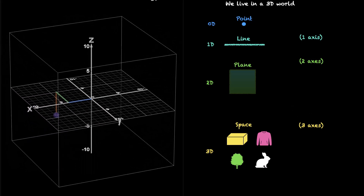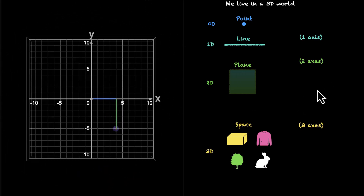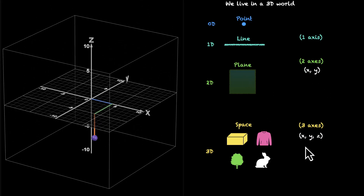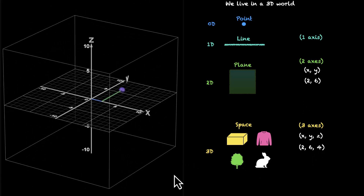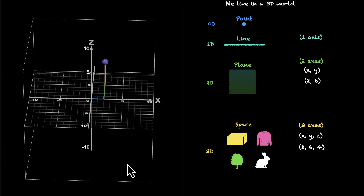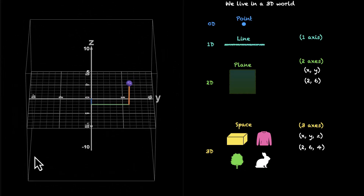Let's talk about coordinates. When we're in 2D, we only need two coordinates, X and Y, written as (X, Y). But when we're in 3D, we need three coordinates: X, Y, and Z. These coordinates tell us how much we have moved along these axes. For example, for the point (2, 6): we move two units along the X axis and six units along the Y axis — so this is (2, 6). But if we have (2, 6, 4), this means we've moved along the X axis, Y axis, and Z axis. So (2, 6, 4) is above this plane — this is where that point lies in 3D space.